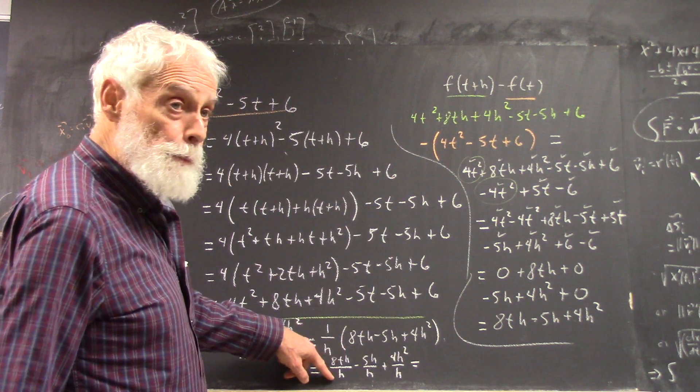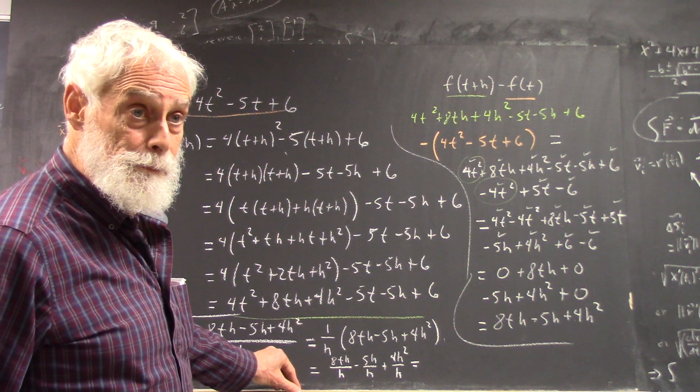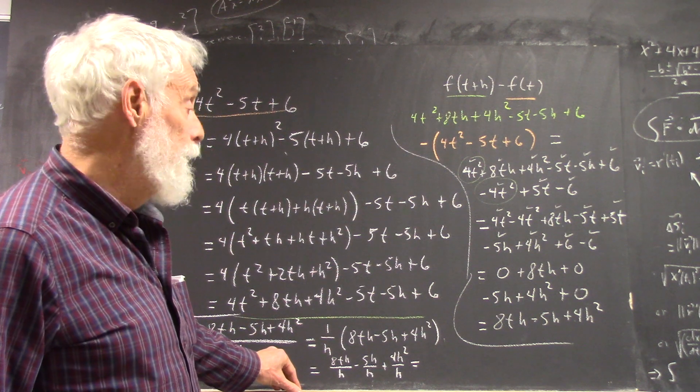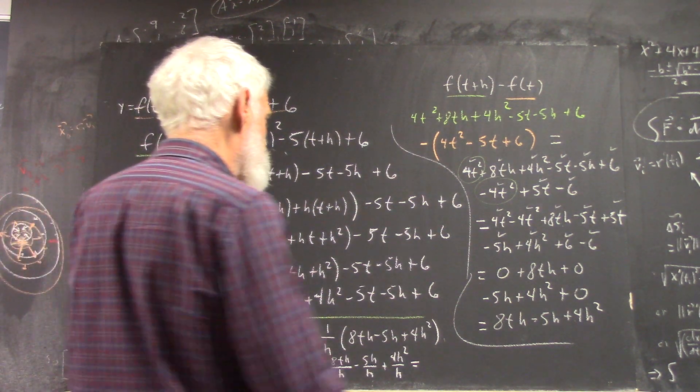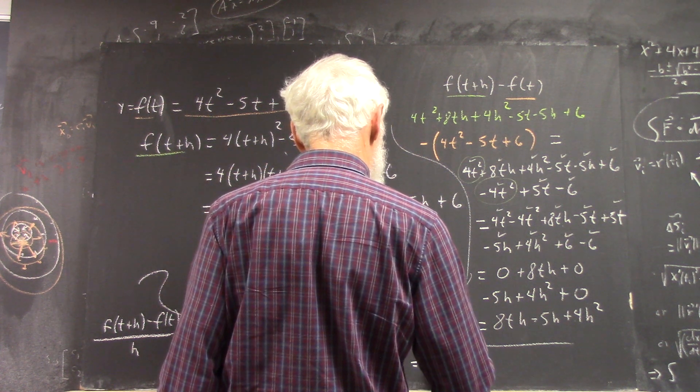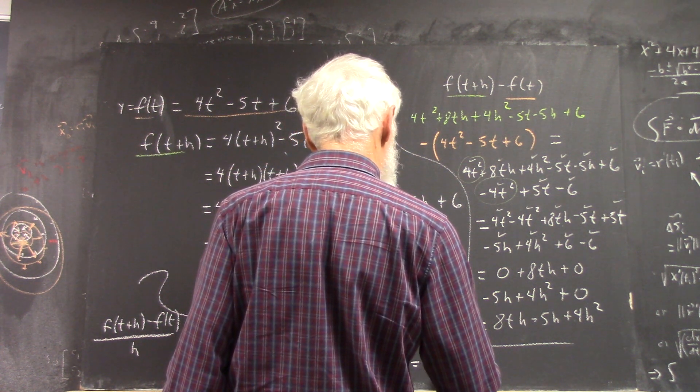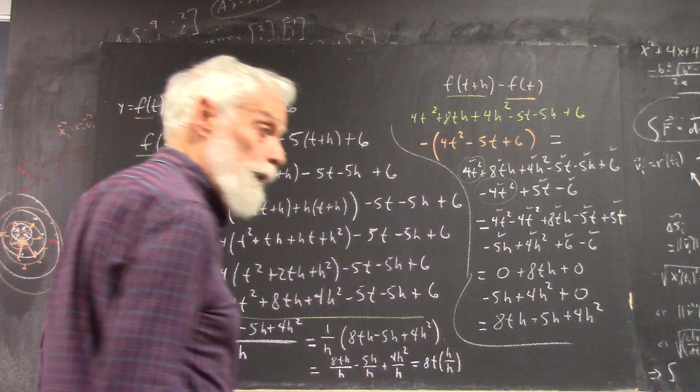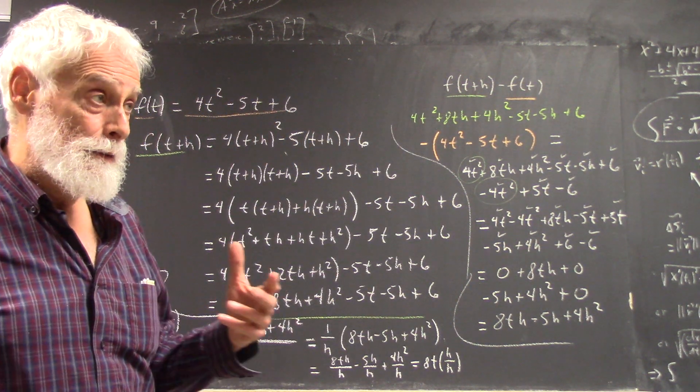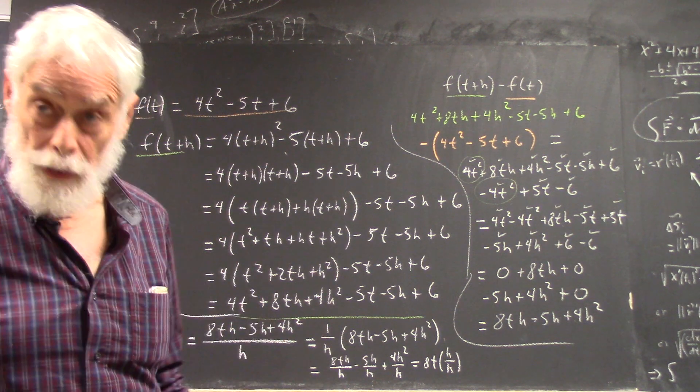Now, 8th divided by h is what? 8th. It's just 8th, right? 8th. Now, I could write that as 8th, just to justify it, times h over h. And you should understand that. And if you're skipping that step, make sure it's because you really understand what to do.